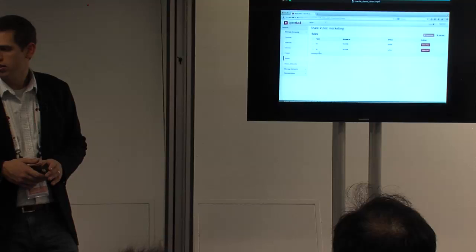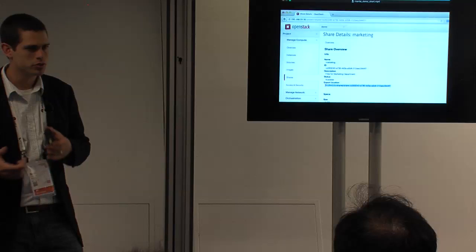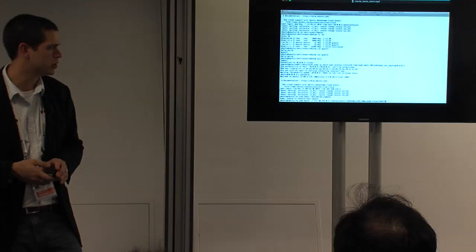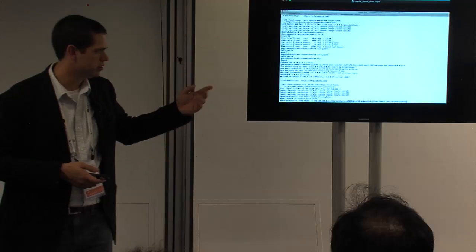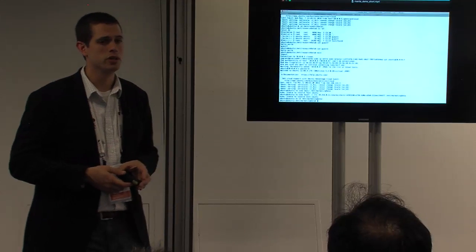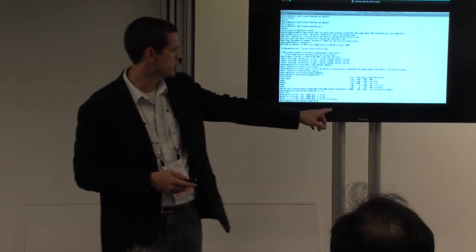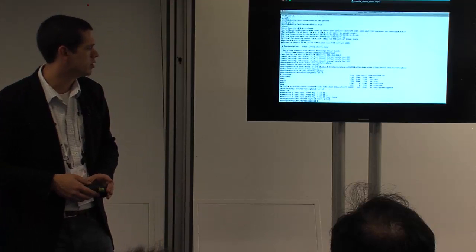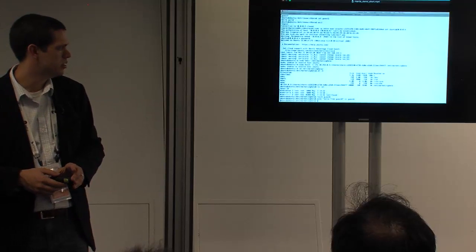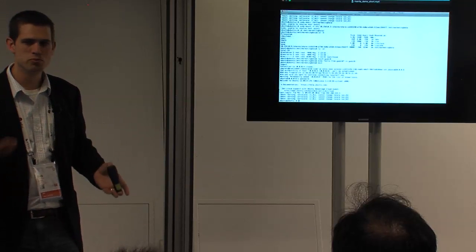We'll get the actual mount string, copy and paste it out of Horizon — you can also call via the CLI or via the API to get this information, and if you were going to script against this it's all available programmatically. We'll then specify the mount point as the new directory we've created, change into that directory, and write a file to prove we can actually do data path I/O on it. You can see from the DF command that it's a one-gig share, basically unused. We'll write a file to say hello from guest number six.